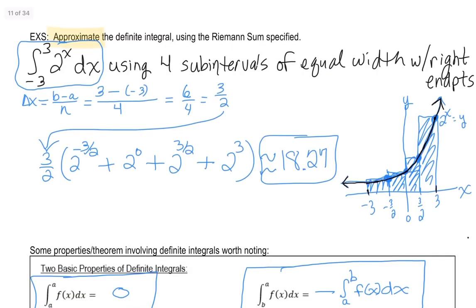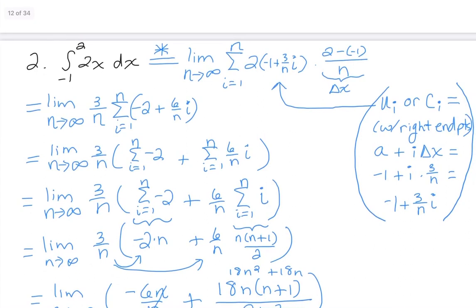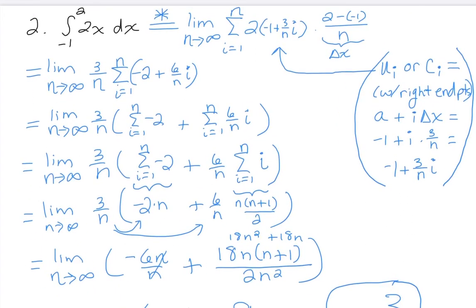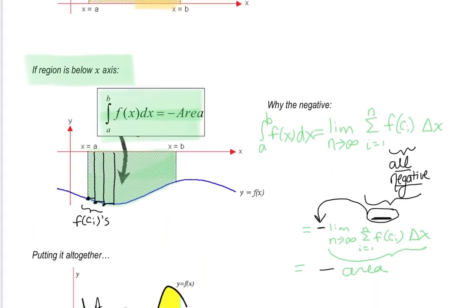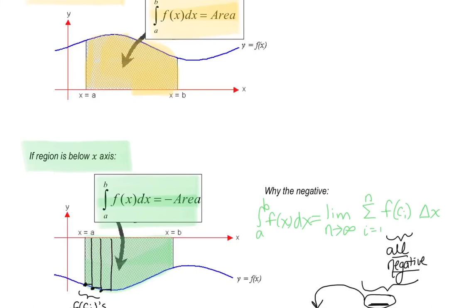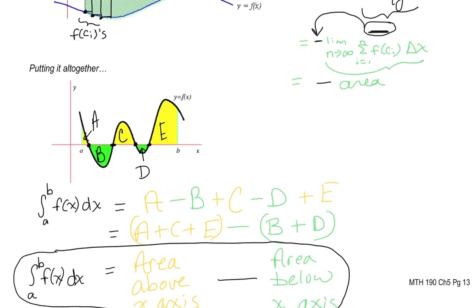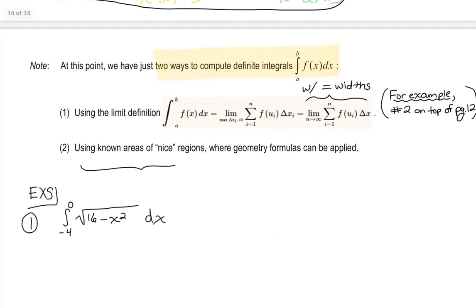Here was an example where we used that formal limit definition on a linear function — that's one way to find the definite integral exactly. The other way involves using the area interpretation. So if we have a geometric region where we can just compute the area, we have to be mindful that if the region is below the x-axis, you get the negative of that area. So the definite integral gives you the area above the x-axis minus the area below the x-axis.